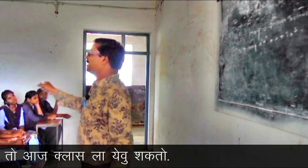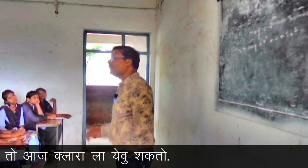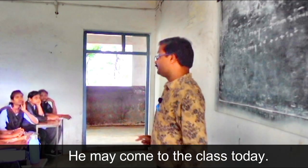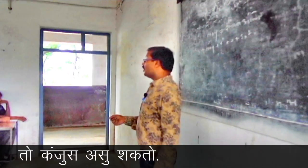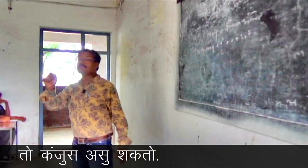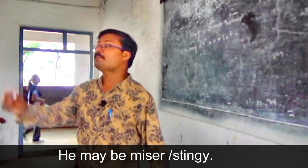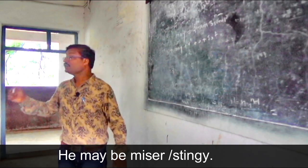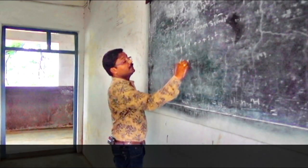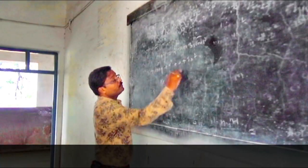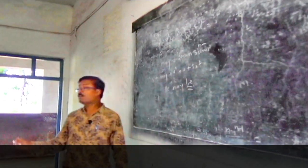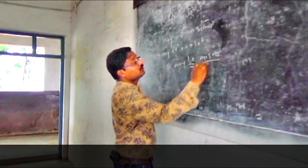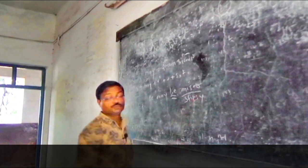'Toh aaj class la yehu shakto' — guarantee nahi — He may come to the class today. 'Toh kanjus asu shakto' — guarantee nahi — He may be miser. Miser means kanjus. He may be stingy — stingy also means kanjus. 'Be' came here — be is a first form of the verb, and miser/stingy is an adjective.